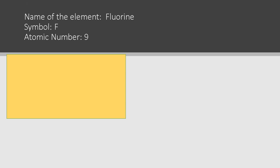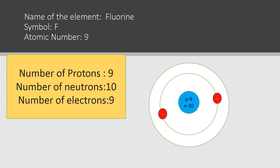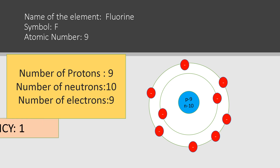Fluorine: symbol F, atomic number nine. The fluorine atom has seven electrons in the outermost shell. Its valency could be seven, but it's easier for fluorine to gain one electron instead of losing seven. Hence the valency is determined by subtracting seven electrons from the octet, giving a valency of one for fluorine.